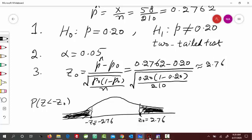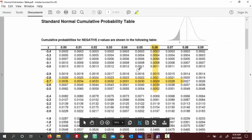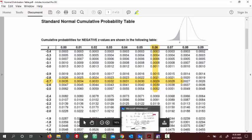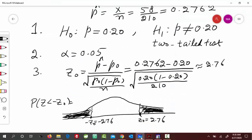Our area is z is less than z0, which is negative z0, which is negative 2.76. Here you see that this is z value negative 2.7. The next digit would come from this column here, 6. And their intersection gives us the value this one, 0.0029. So this would be equal to 0.0029. This is this area. And because of symmetry, this area on this side would also be the same 0.0029.